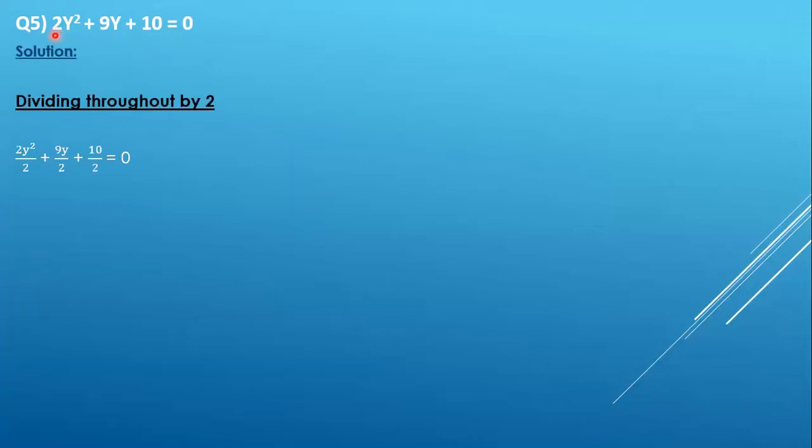So we get 2y² / 2 + 9y / 2 + 10 / 2 which gives us y² + 9y / 2 + 5, since 2 into 5 is 10.